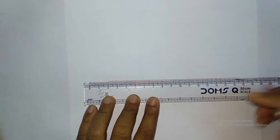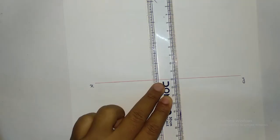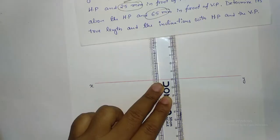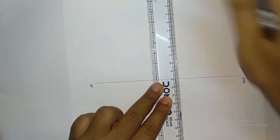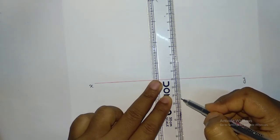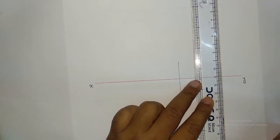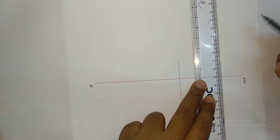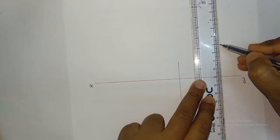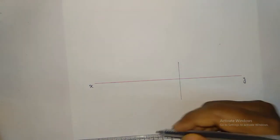This is the reference line XY. Now I am going to draw the distances: 20 and 25 — from here to here is 20 above XY, and from here to here is 25 below XY. The other end has 40 and 65 — from here to here is 40 above XY and 65 below XY. Now I am going to draw the locus.